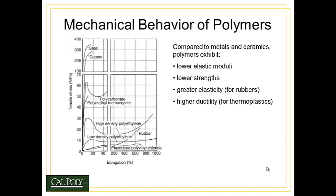Recall that the mechanical behavior of polymers is radically different from that of other materials. Specifically it has a lower elastic modulus, lower strengths, and greater elasticity, especially for rubbers, or higher ductility if we're talking about thermoplastics. As you can see from the graph, steel and copper have much higher strengths than the weaker polycarbonate or polymethylmethacrylate, and materials like rubbers or polyethylene have much higher strain to failure than metals, indicating higher ductility or higher elasticity.